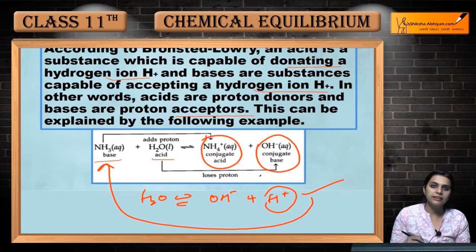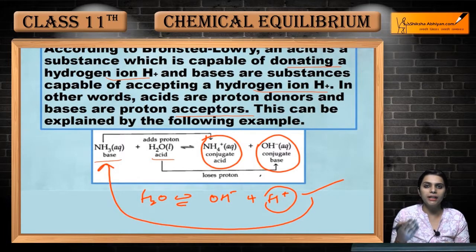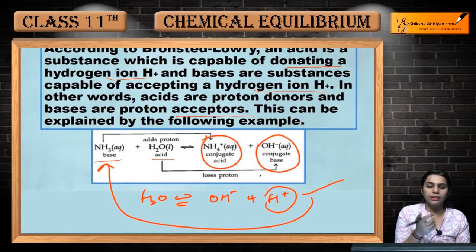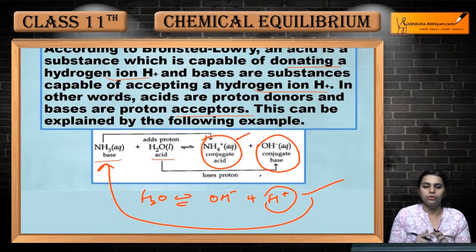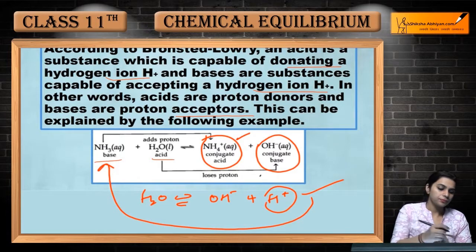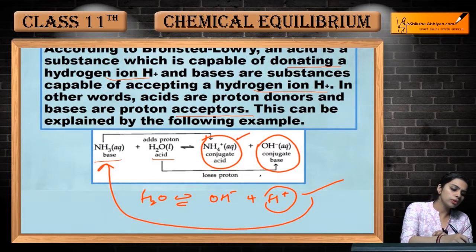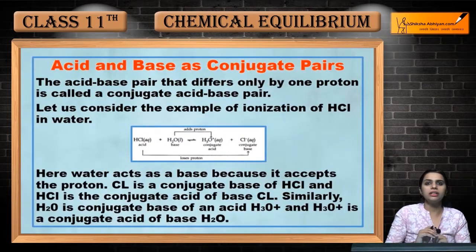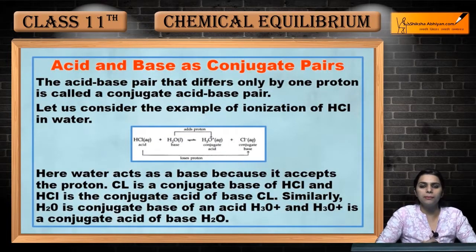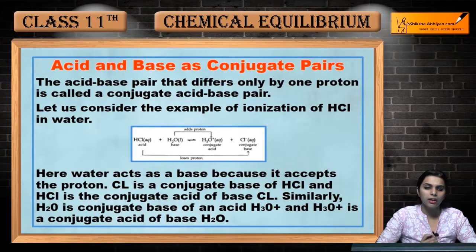H2O has accepted the proton, meaning the base has accepted the proton. So what is it? It becomes the conjugate acid. So we got another concept from Bronsted-Lowry theory: the acid-base conjugate pair relationship.